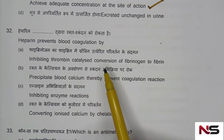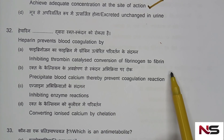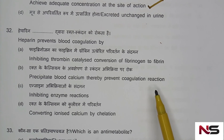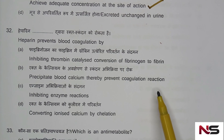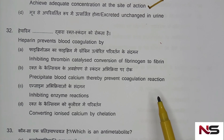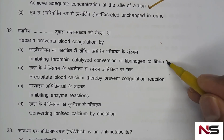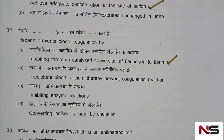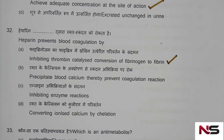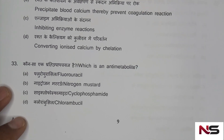Option A: inhibiting thrombin-catalyzed conversion of fibrinogen into fibrin. Option B: precipitate blood calcium to prevent coagulation. Option C: inhibiting enzyme reaction. Option D: converting ionized calcium by chelation. The correct answer is option A — heparin prevents blood coagulation by inhibiting the thrombin-catalyzed conversion of fibrinogen to fibrin.